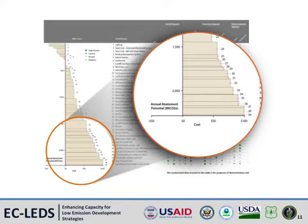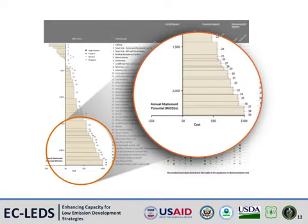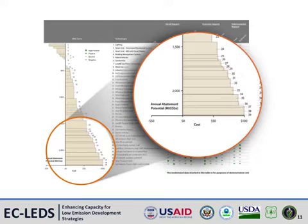This slide zooms in on the MAC curve element of the DIA framework and shows that the MAC curve remains unchanged. Building on the MAC curve by providing columns to present key development impacts of technology options, the framework simply adds another component to support development-focused climate decision-making. While the MAC curve is useful in giving a sense of marginal cost and abatement potential, it should be noted that use of the MAC curve within the framework is not required.